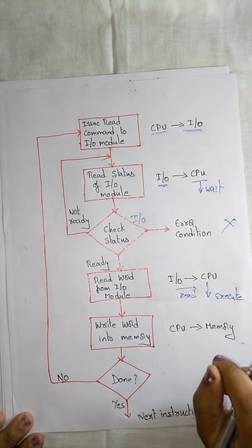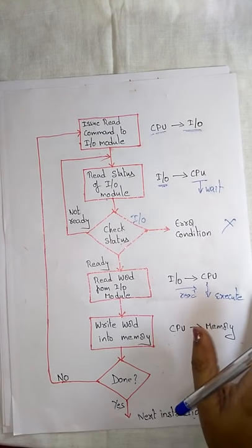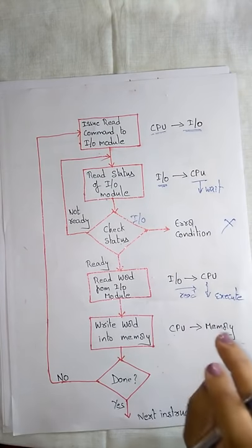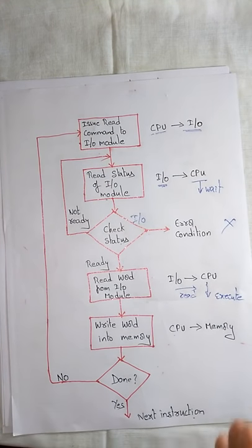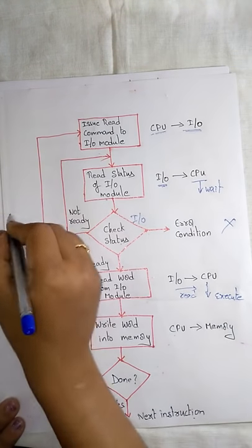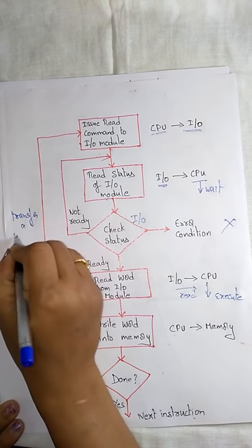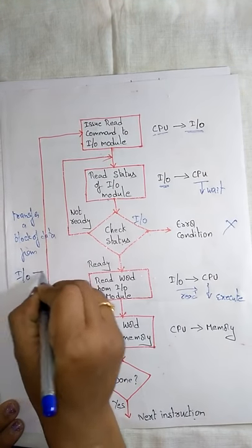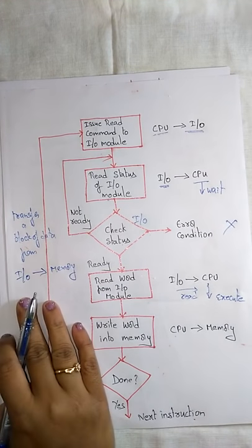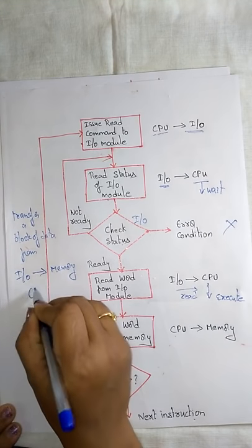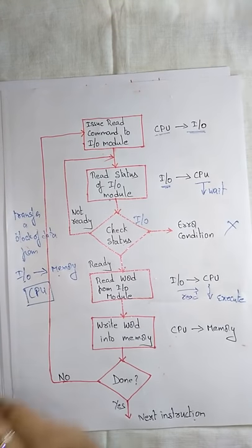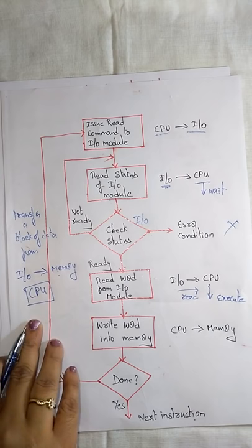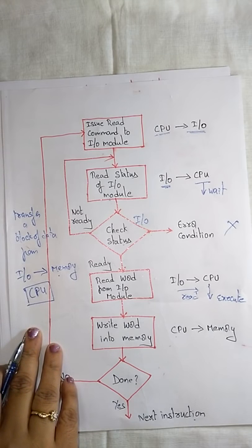If the CPU is faster than the I/O module, then this method is wasteful. The common I/O programming task here is to transfer a block of words from an I/O device and store them into a memory buffer — that is, transferring a block of data from I/O devices to memory. Until the I/O operation is completed, the CPU has to wait after issuing the read command. So the wasted time is more in Programmed I/O. Thank you.